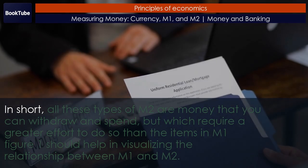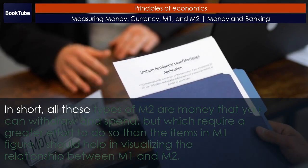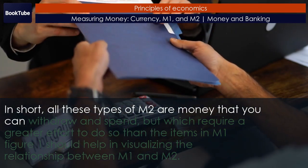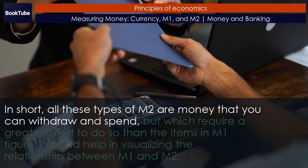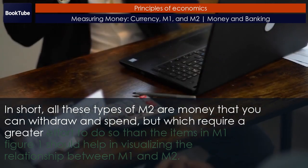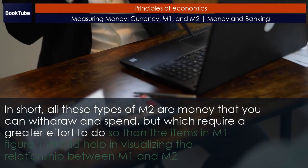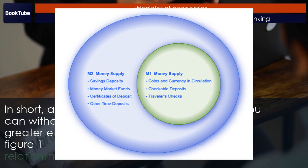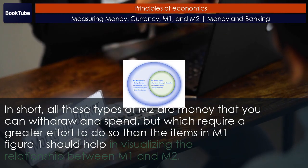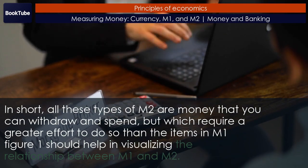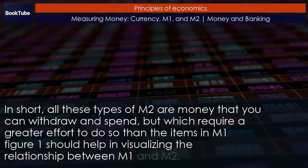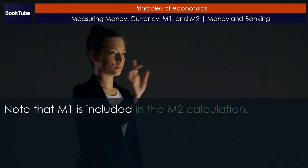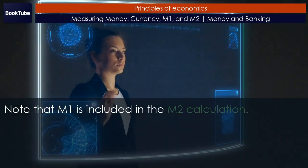In short, all these types of M2 are money that you can withdraw and spend, but which require a greater effort to do so than the items in M1. Figure 1 should help in visualizing the relationship between M1 and M2. Note that M1 is included in the M2 calculation.